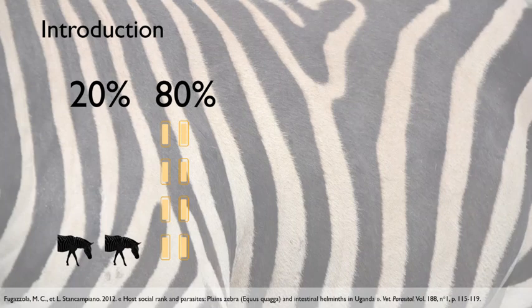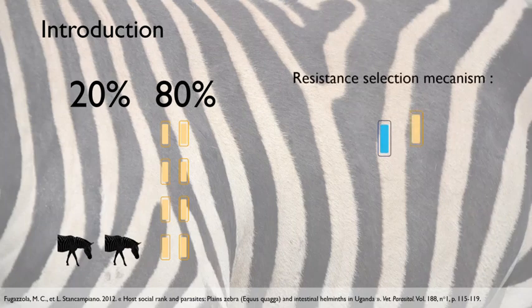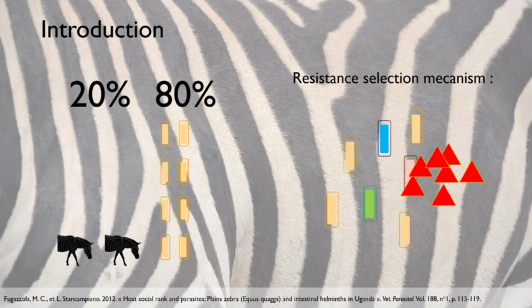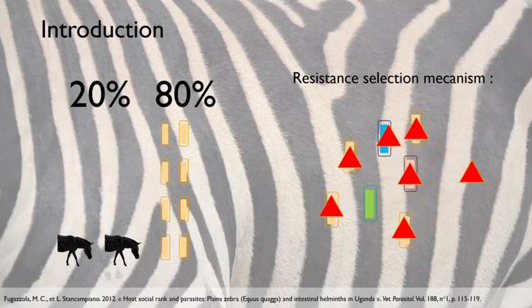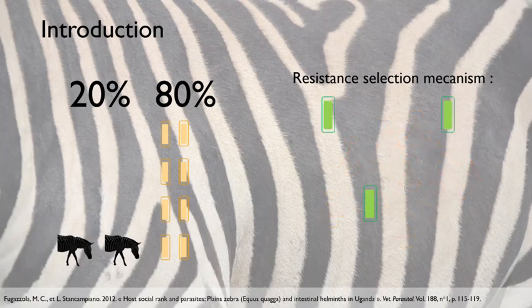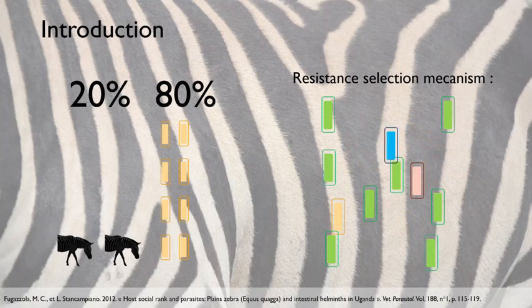Nevertheless, all individuals are equally treated with anthelmintics in captive conditions, leading to overdosing of the medicine and loss of its efficiency due to selection of naturally resistant parasites, as illustrated here with the red triangles representing the anthelmintic treatment.